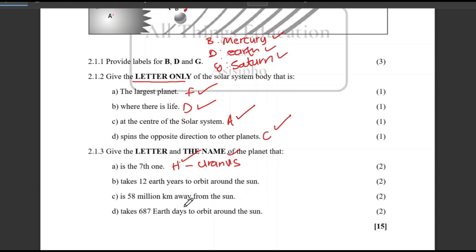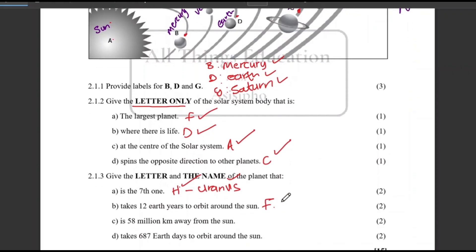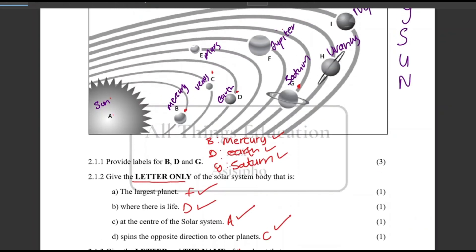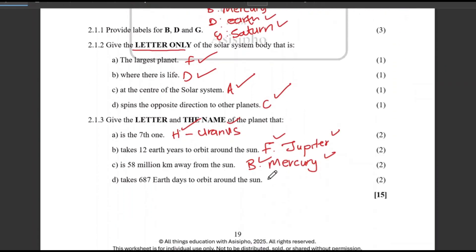Takes 12 Earth years to orbit around the sun. That will be Jupiter. You need your content knowledge for this one. Jupiter. So where is Jupiter? There. What letter is it? F. So you write the letter and then the name. Letter and the name of the planet that is 58 million kilometers away from the sun. That will be Mercury. And in our diagram, Mercury is letter B. Takes 687 Earth days to orbit around the sun. That is Mars, obviously. Then the letter for Mars, I hope I'm correct, I think that is E. There, E. There it is. E, Mars.